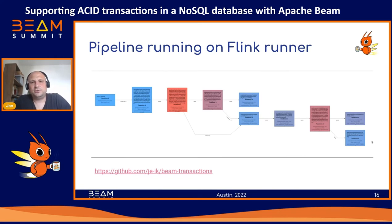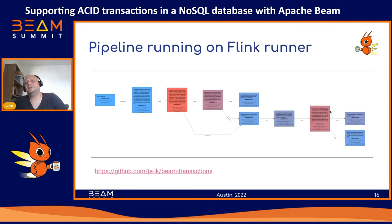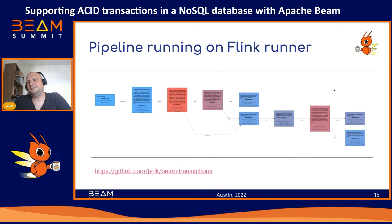This is how the pipeline looks on the Flink runner, which I used because it was the one I had the easiest access to. Here is a link to the repository where you can see the proof-of-concept implementation of the full ACID transaction pipeline. We can see the read path on top and the write path going down. One operator is highlighted in red, showing that the verification of transactions is more involved and the runner spends more time there.